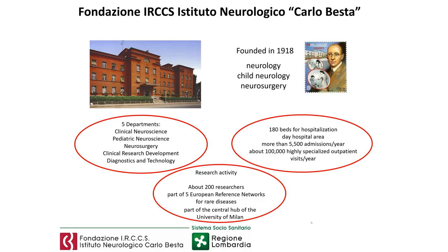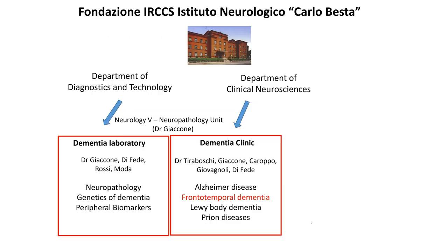The institute deals with adult neurology, child neurology, and neurosurgery. Carlo Besta has five departments and 180 beds for hospitalization with more than 5,000 admissions per year, and a research activity with about 200 researchers, with a link to the University of Milan. I work in the Neurology 5 Neuropathology Unit, which is divided into two parts: the laboratory part for dementia, neuropathology, genetics, and peripheral biomarkers, and a dementia clinic for clinical assessment of different types of dementia, in particular Alzheimer's disease and frontotemporal dementia. The institute also has a center for motor neuron disorders for diagnosis and follow-up of patients with ALS and other clinical phenotypes.